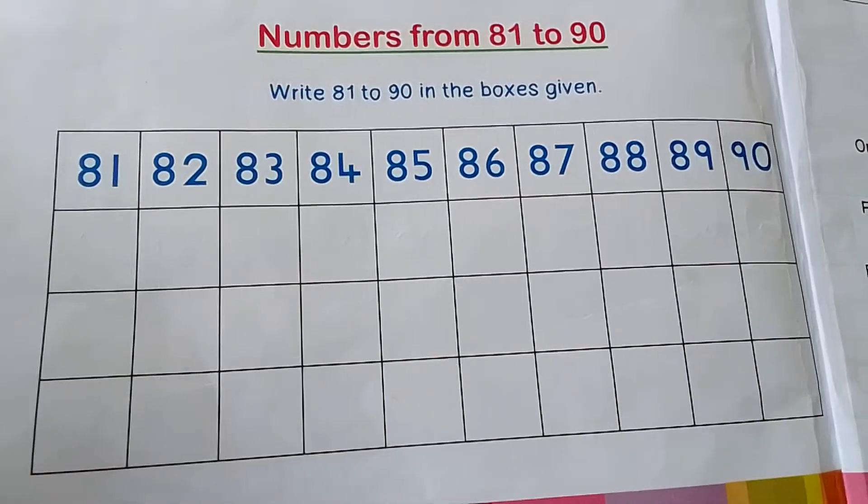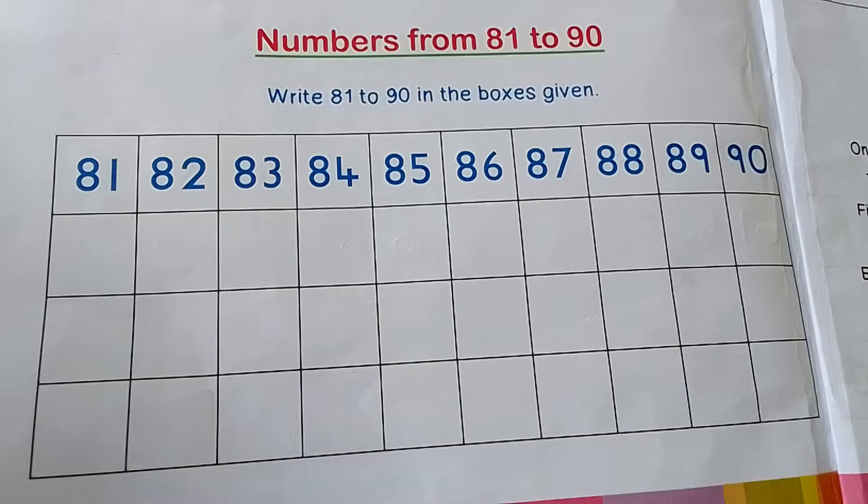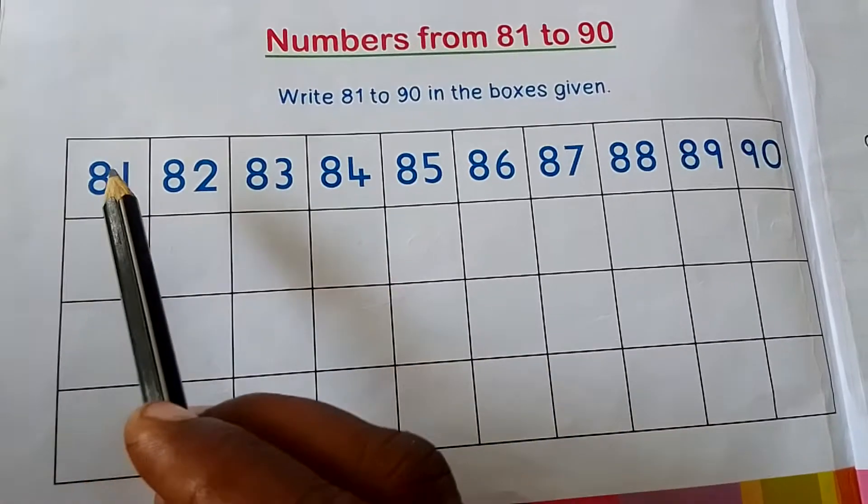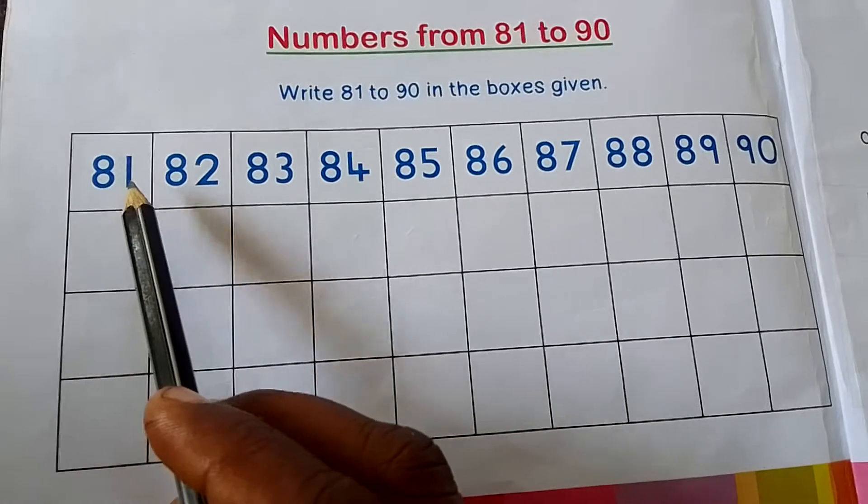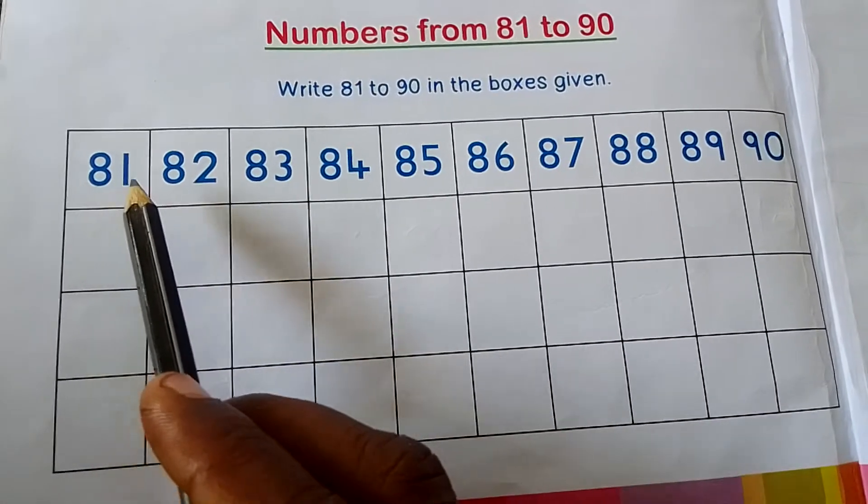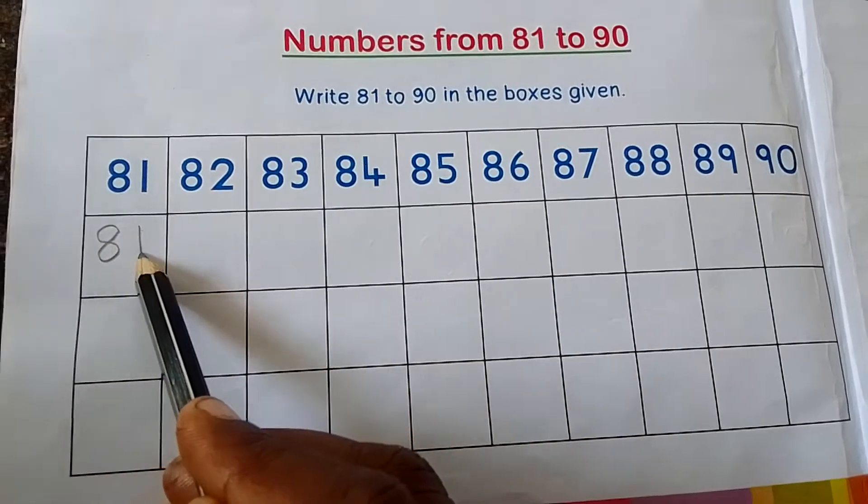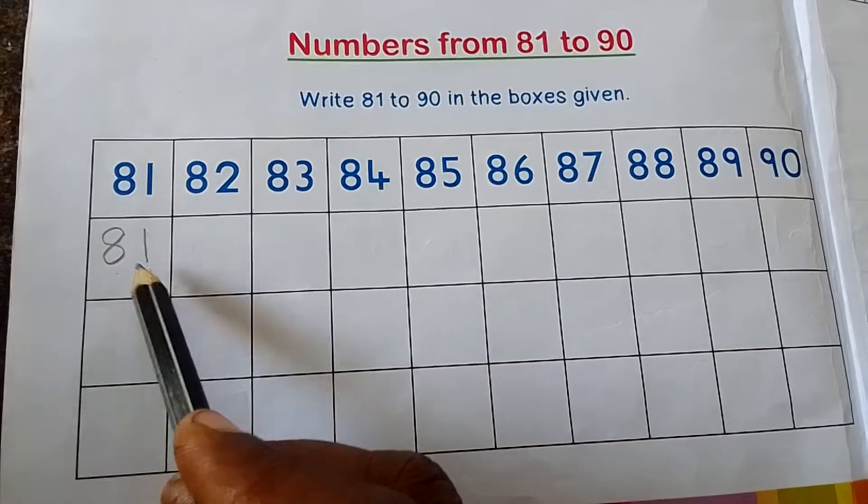Students, next we write this number. Shall we start? Okay, first number 81. How to write 81? First we write number 8, then we write number 1. This is 81.